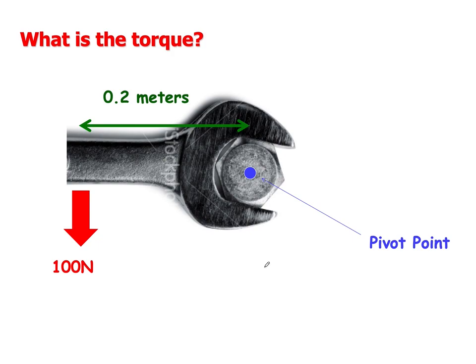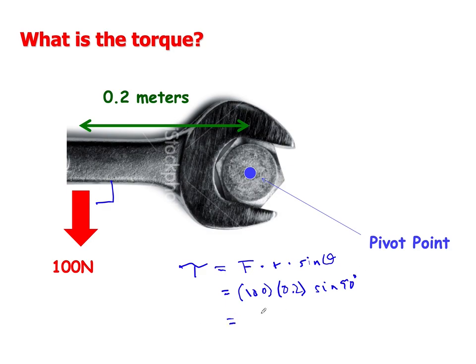Some quick calculations — no calculator required. In this first case, the force is exactly perpendicular to the radius vector, so torque equals F times R times sine of theta. That gives 100 newtons times 0.2 meters times sine of 90°, which equals 1. So the torque is 20 newton-meters. Positive or negative? Using the cross product, this force tends to rotate the bolt counterclockwise, so this is a positive torque — the cross product points in the positive z-axis.